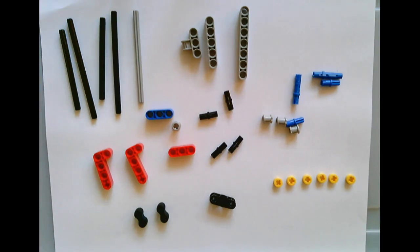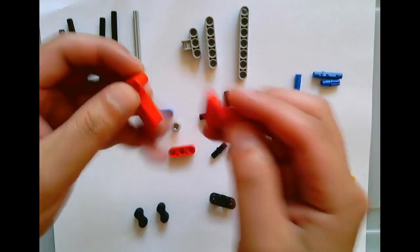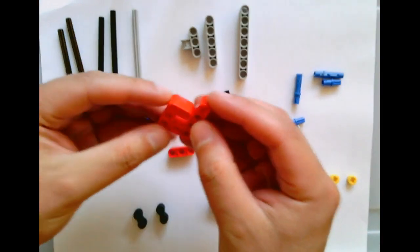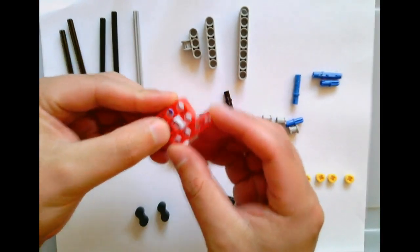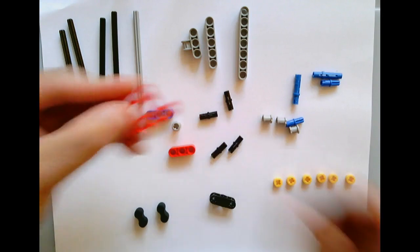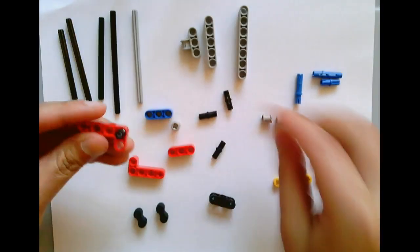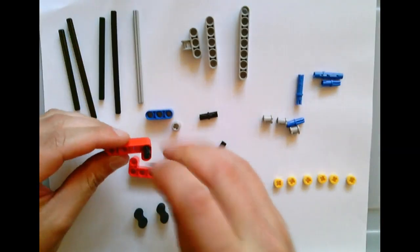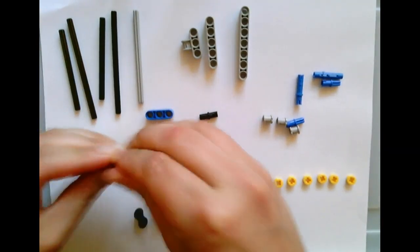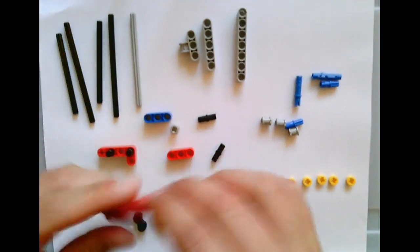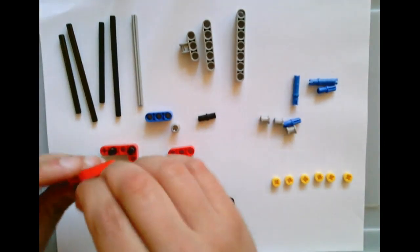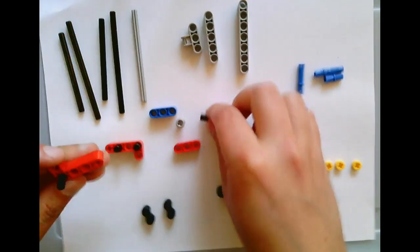Once you find the pieces, follow along here. We're going to take these two red pieces and they're going to form a square like this. You're going to take these little black pieces and place them in these spots on your red pieces, like so.